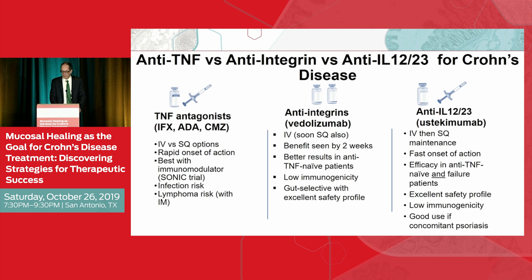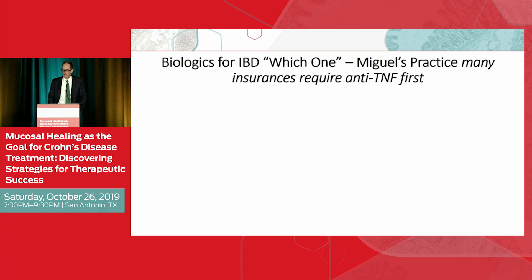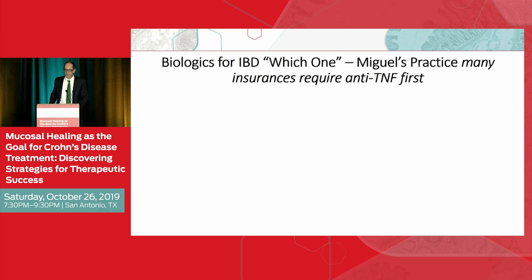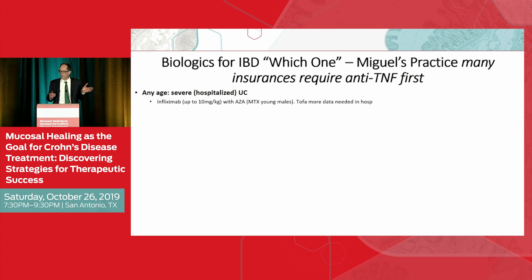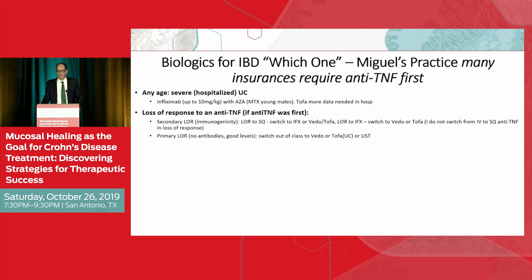Here's what I do in my practice — keeping in mind that insurances often dictate what we can use first, so you may encounter agents you want to start but can't because they're not covered, requiring you to step through a different medicine first. For any hospitalized IBD patient, I am still using infliximab as my first-line agent, and I use combination therapy. For young males I tend to use methotrexate. If there's been a loss of response to a subcutaneous anti-TNF for Crohn's, I generally switch to IV infliximab.